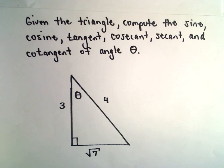In this example, we've got a right triangle with side lengths 3, square root of 7, and then a hypotenuse with length 4. We're going to find the sine, cosine, tangent, cosecant, secant, and cotangent of that angle theta.